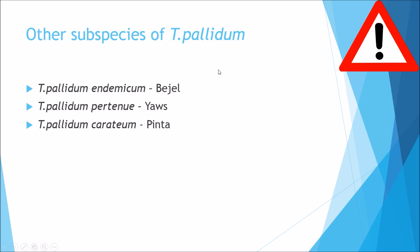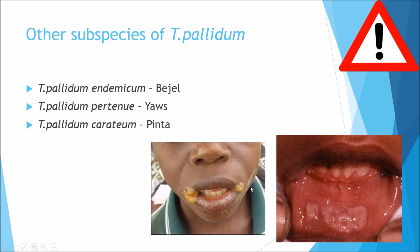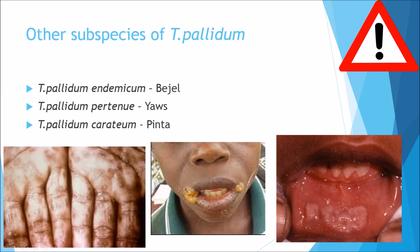There are also a few subspecies of Treponema pallidum. Treponema pallidum endemicum causes a disease called Bejel, where you get swollen sores on the lips. Another type is Treponema pallidum pertenue, which causes Yaws — nasty sacs around the lips. And you can also get Treponema pallidum carateum, which causes Pinta, a serious skin rash which can spread all over the body.